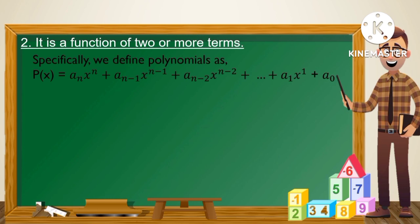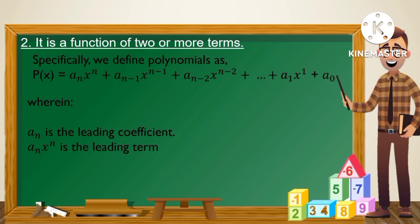Specifically, we can define a polynomial as: p of x is equal to a sub n times x raised to n, plus a sub n minus 1 times x raised to n minus 1, plus a sub n minus 2 times x raised to n minus 2, and so on, up to a sub 1 times x plus a sub 0. Wherein a sub n is the leading coefficient, a sub n times x to the n is the leading term, and a sub 0 is the constant term of the polynomial.